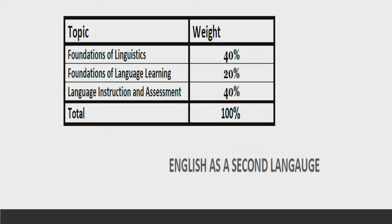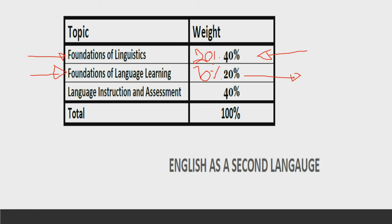Let's review the weightage given to each topic. Your first section is related to foundation of linguistics, given 40% weightage. Since I have successfully cleared the exam, my tip is: learn the phonetic chart completely — be thorough with each sound and each symbol. The next section deals with foundation of language learning at 20%, but it is very important to get the passing percentage in each section. For the 40% section, your passing percentage should be at least 20%; for the 20% section, you should grab at least 10%.